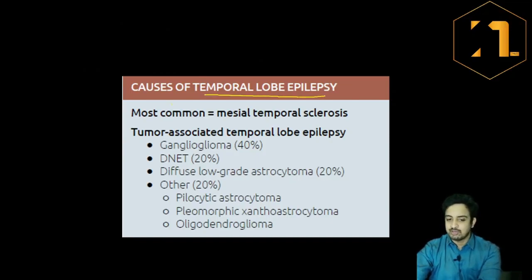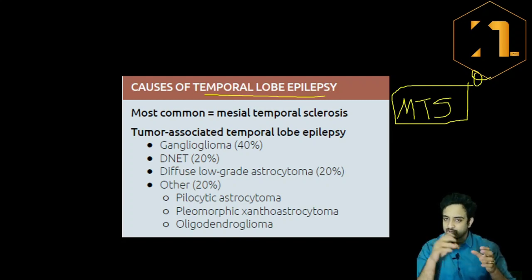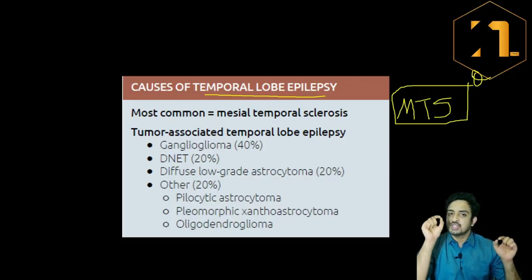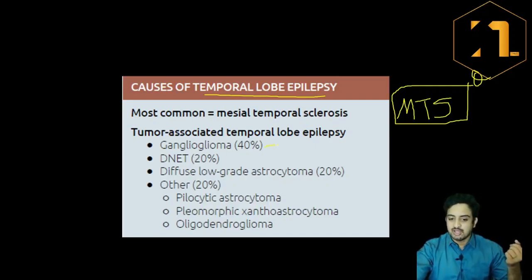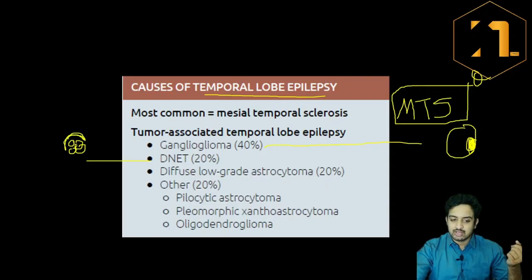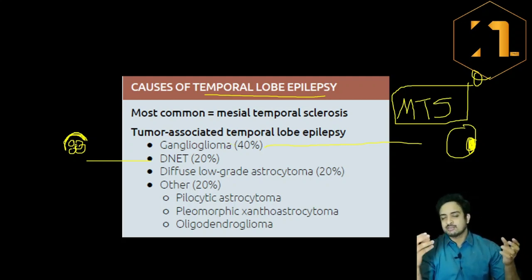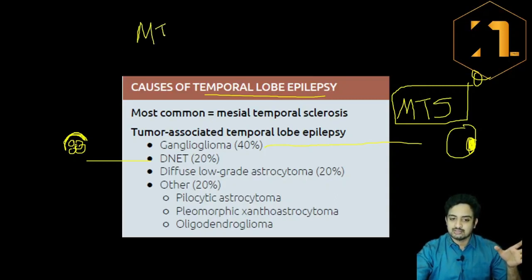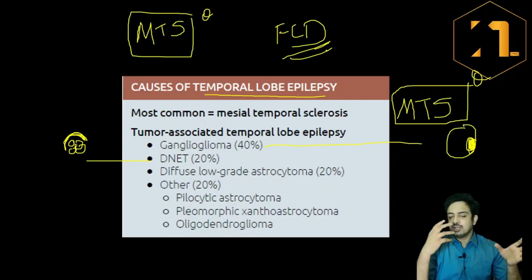To summarize the causes of temporal lobe epilepsy: the most common cause is mesial temporal sclerosis, where there is sclerosis of the hippocampus with reduced size and T2 hyperintensity. The most common tumor is ganglioglioma — a cystic lesion with enhancing mural nodules. The second most common tumor is DNET — tiny bubbly lesions with T2 FLAIR hyperintense rim sign. Focal cortical dysplasia is also an important developmental cause that can result in seizures.